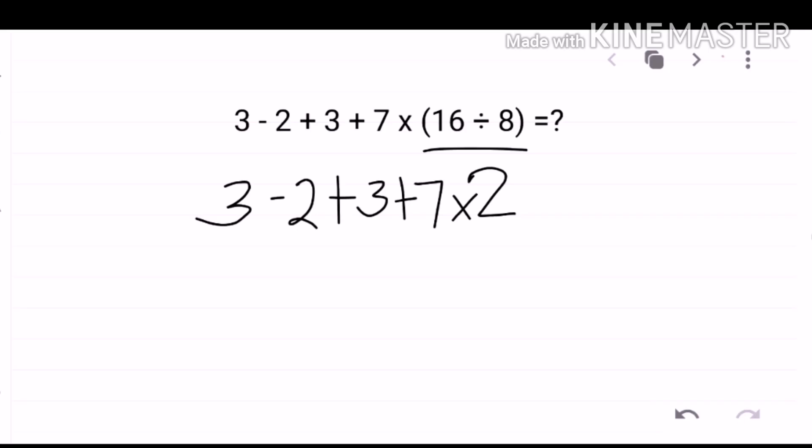Since there is multiplication here and there is no division anymore, let's just do multiplication. So, 7 times 2 is 14 and then let's write the remaining values in our equation.